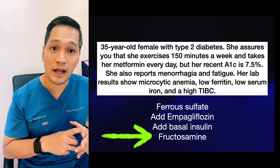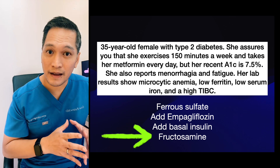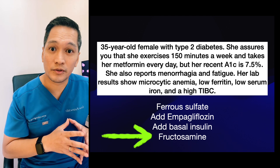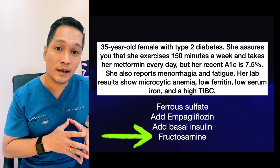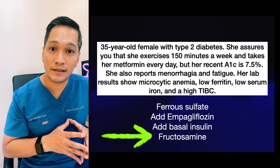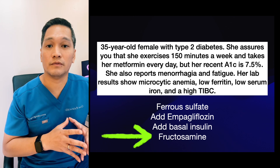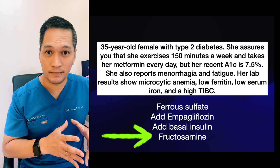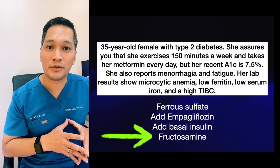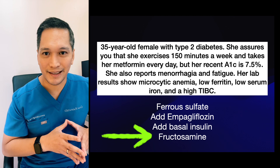Another option is to order fructosamine. Fructosamine is bound to albumin, and since the turnover of albumin is around 28 days, fructosamine provides an estimate of mean glucose levels over approximately 2 weeks, compared to 3 months with hemoglobin A1c.